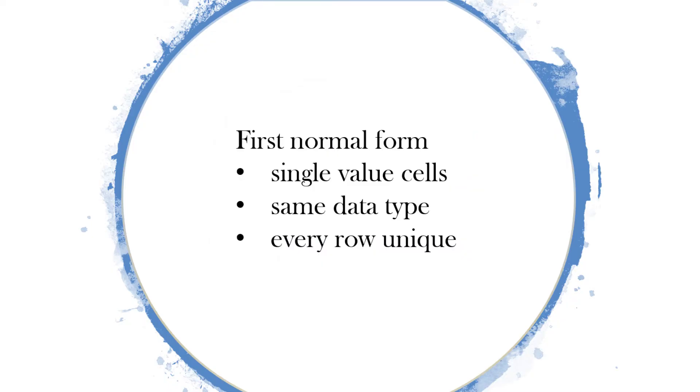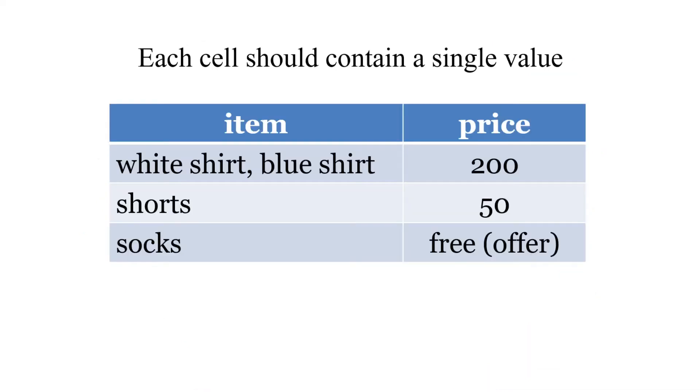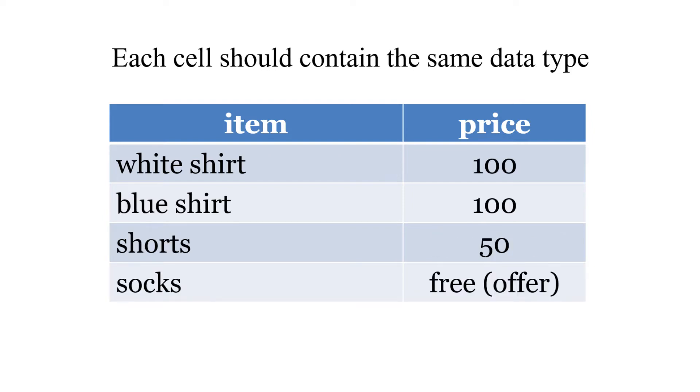First normal form: we're looking at single-valued cells, the same data type in a column, and every row must be unique. Here we've got a very small table, but the first row in the item says white shirt and blue shirt. We want to make sure there's not more than one item in one cell, so we can split them up. Now we have the white shirt and blue shirt separated.